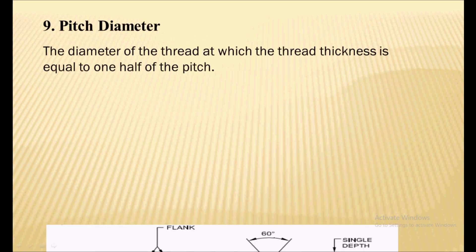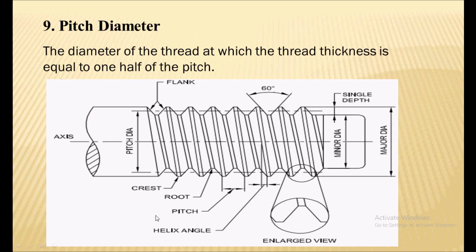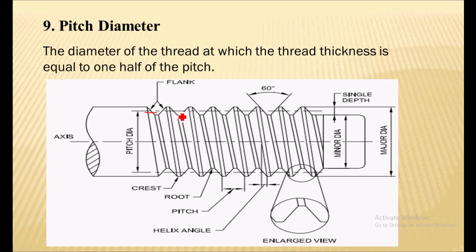Next is the pitch diameter. Pitch diameter is an imaginary diameter — it is the diameter of the thread at which the thread thickness is equal to one half of the pitch. That is nothing but the pitch diameter.